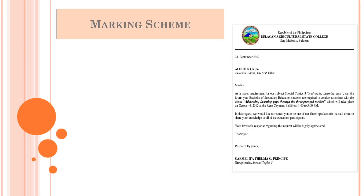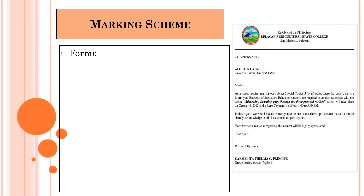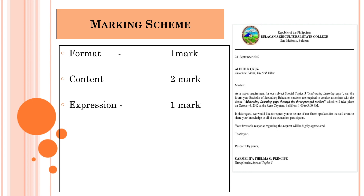Let us now understand the marking scheme. One mark is allotted for the format. Format includes sender's address, date, receiver's address, subject line, salutation, complimentary close, name and designation. The content carries two marks, and one mark is allotted for expression.